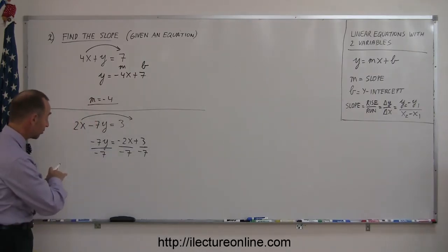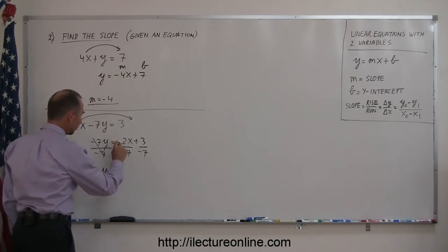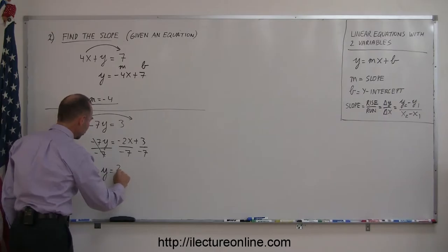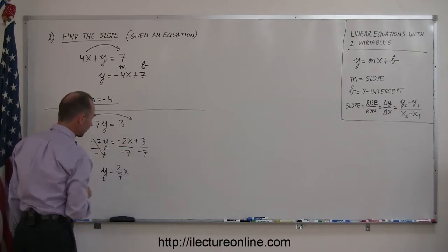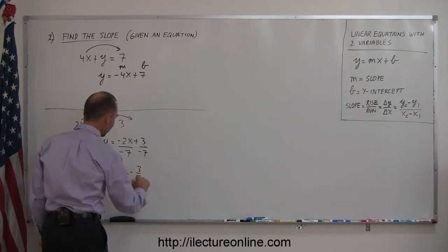Remember, whenever you do the left side equation, you must do exactly the same on the right side. The negative 7's cancel out, so now you end up with y equals negative 2 divided by negative 7 is 2/7 x, because the negatives cancel out, and positive 3 divided by negative 7 is a minus 3 over 7.